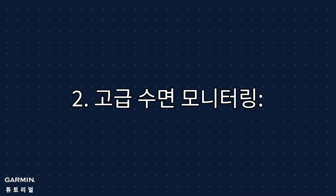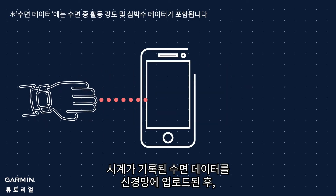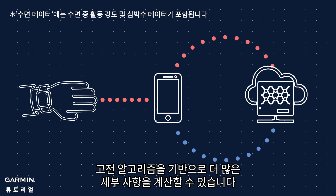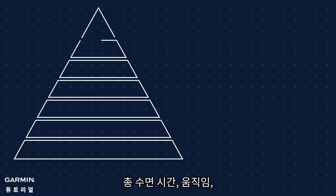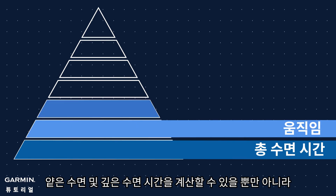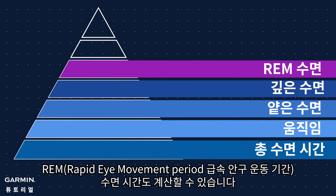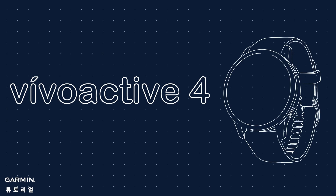2. Advanced sleep monitoring. After the sleep data recorded by the device is uploaded to the neural network, even more details can be calculated based on the classical algorithm. It not only can calculate your total sleep duration, movements, and light and deep sleep duration, but also the duration of REM (rapid eye movement) period. This algorithm is used by devices that have the advanced sleep monitoring feature, like VivoActive 4.